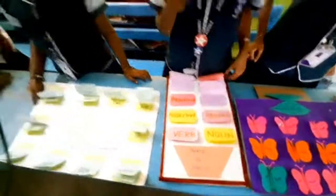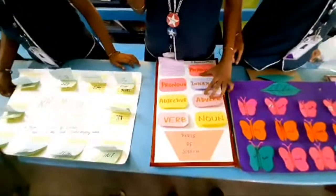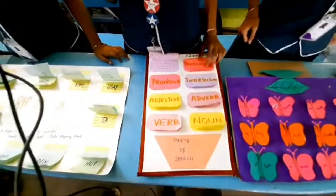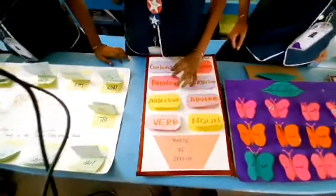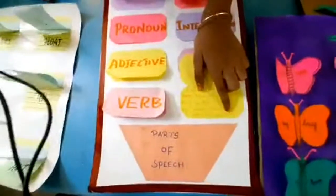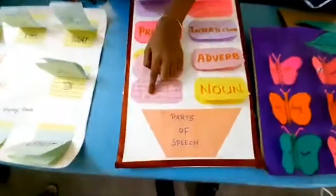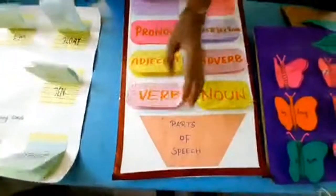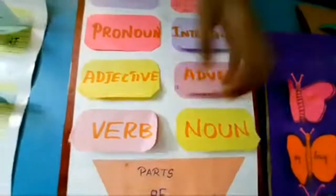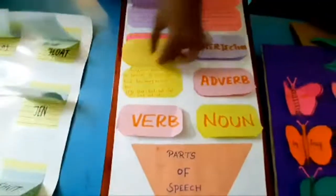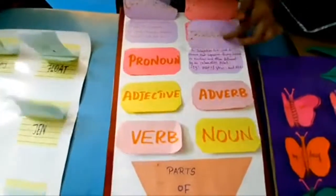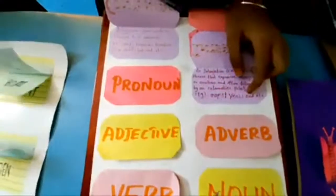Parts of speech — there are eight types: noun, verb, adverb, adjective, interjection, pronoun, preposition, and conjunction. For example, nouns: Mina, Delhi, Matt. Verbs: walk, see. Adverbs: loudly, always, never. Adjectives: blue, red, tall, fat. Interjection: oops.